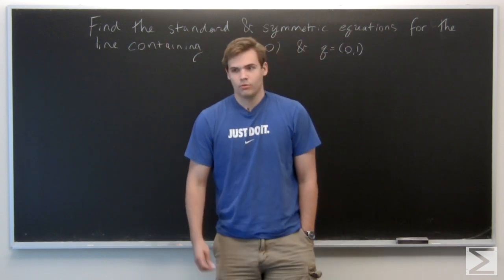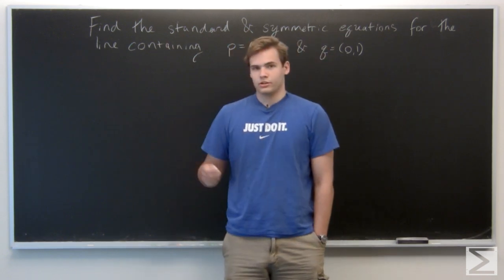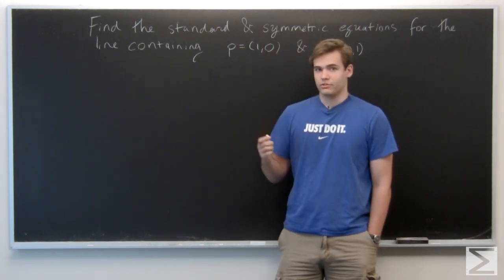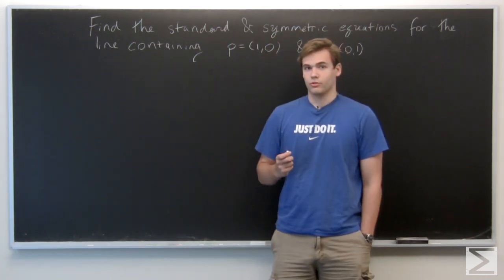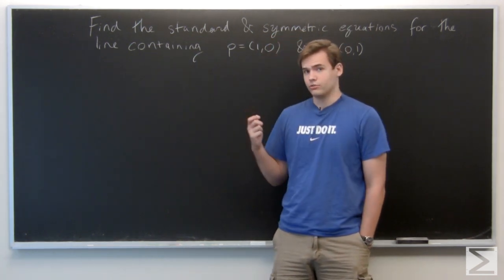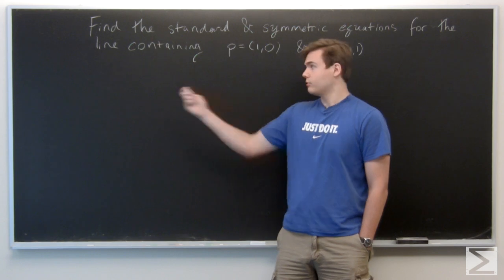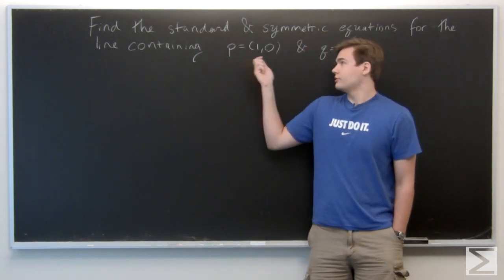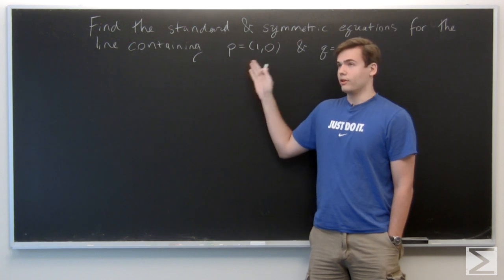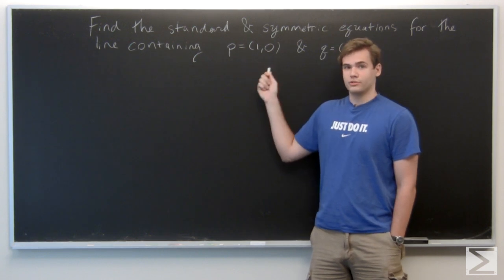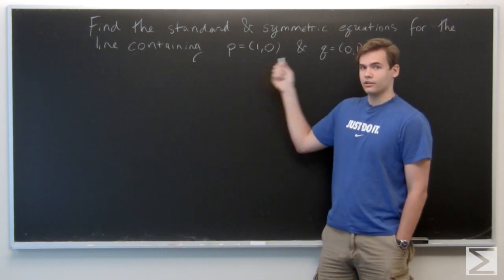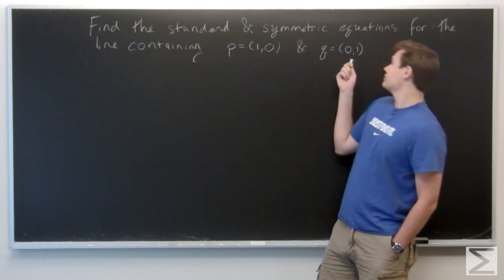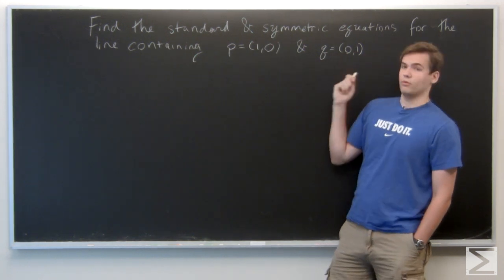We want to determine the standard and symmetric equations for the line in R² containing two points: P, which is the point (1, 0), and the point Q, which is (0, 1).